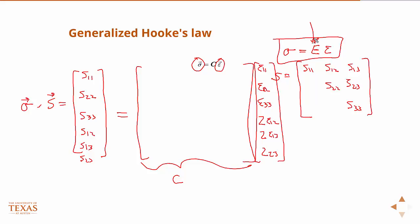Now thankfully, it turns out through energy arguments and exploiting the symmetry of the stress and strain tensor, you can reduce it down to actually 21. So for a material that has no planes of symmetry whatsoever, there's 21 constants in that C matrix that are unique.